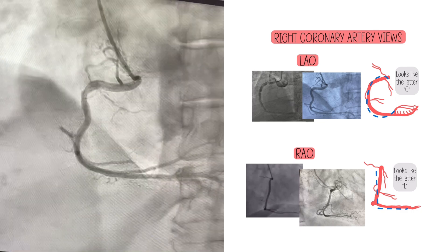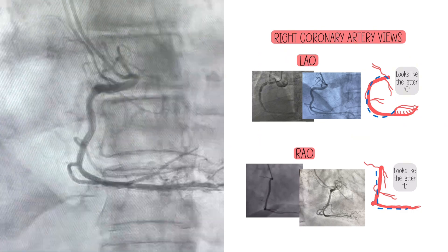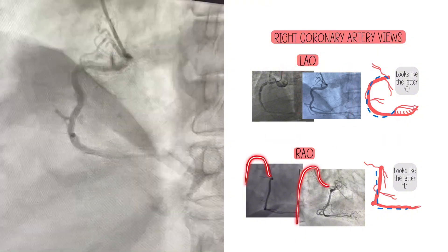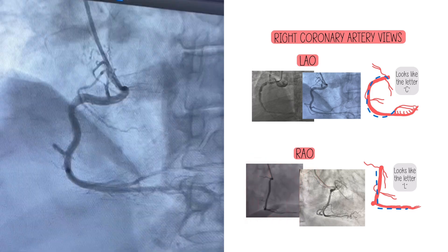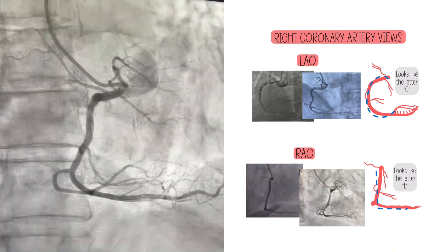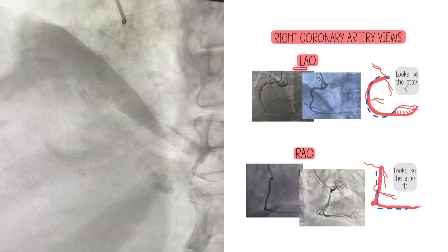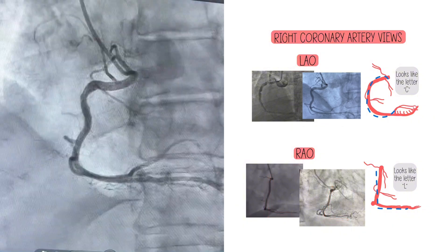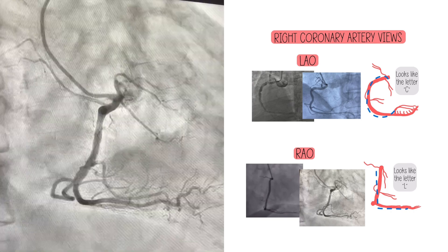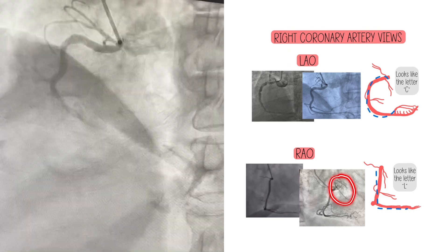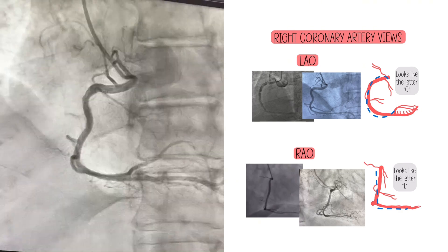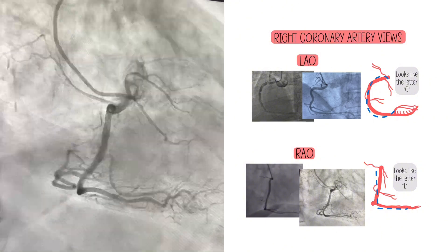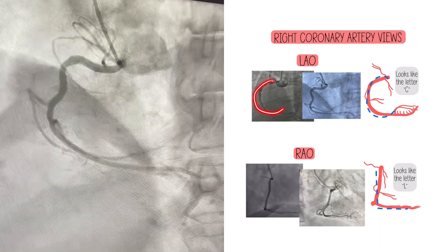You can tell the view by the spine rule: if the spine is on your right, it's LAO; if the spine is on your left, it's RAO. But when you can't appreciate where the spine is, a curved C shape tells you it's LAO, and a straighter L shape tells you it's RAO. This will be more obvious in dominant or large right coronary arteries. In a non-dominant RCA, these might be the only two views you take — just an LAO and an RAO.